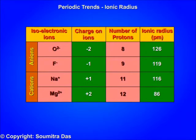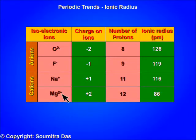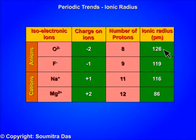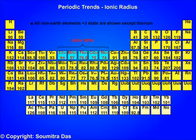For isoelectronic ions like O2-, F-, Na+, and Mg2+, we see that for cations Na+ and Mg2+, the higher the charge, the smaller the radius. Mg2+ will have a smaller radius due to extra attractive pull by 12 protons instead of 11 protons as in the sodium ion. For anions O2- and F-, the higher the charge, the bigger the radius. The periodic trend down a group is increasing, as expected.